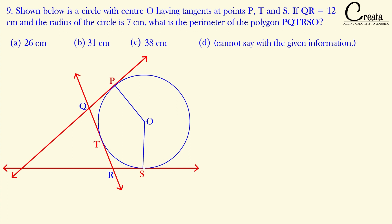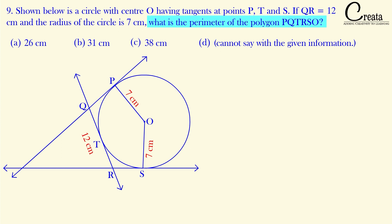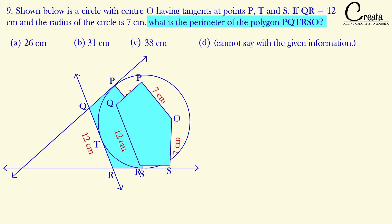Further, in this question QR is given as 12 centimeters. The radius of the circle is given as 7 centimeters — OP and OS are the radius of the circle, which is 7 centimeters. We have to find the perimeter of the polygon PQTRSO.